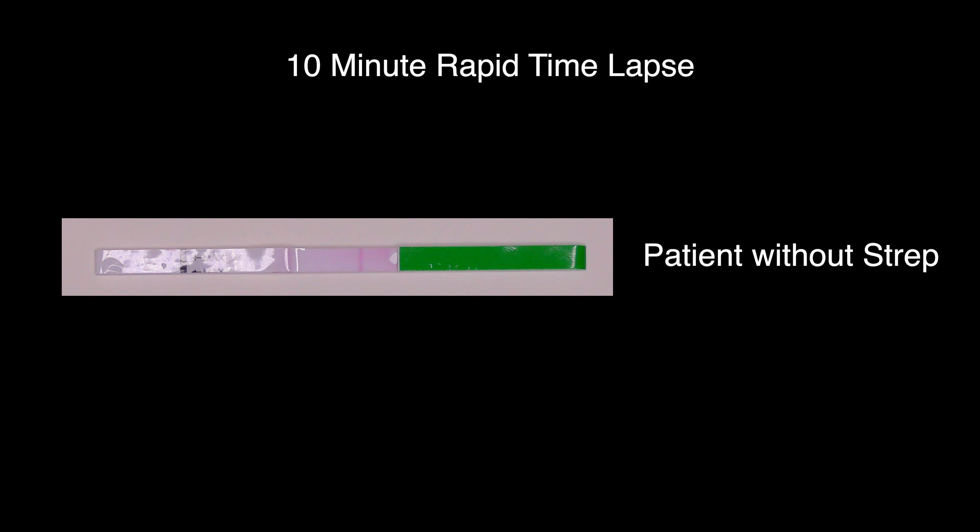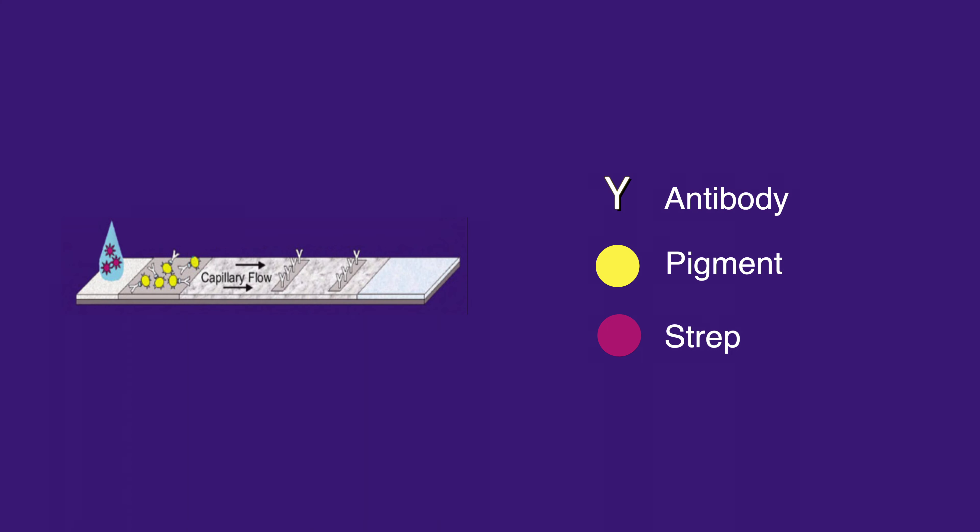So how does this test work? In essence, this test runs the liquid sample along the surface of a pad with reactive molecules that show a visual positive or negative result. The pads are based on a series of capillary beds which has the capability of transporting fluids spontaneously via capillary action like a sponge. This testing technique is called lateral flow assay.